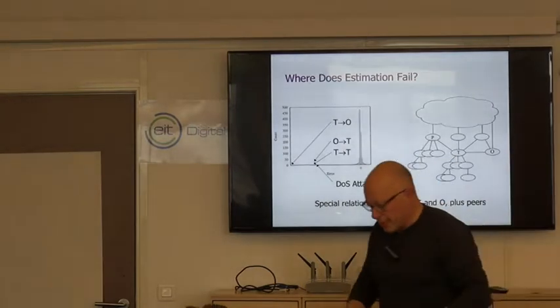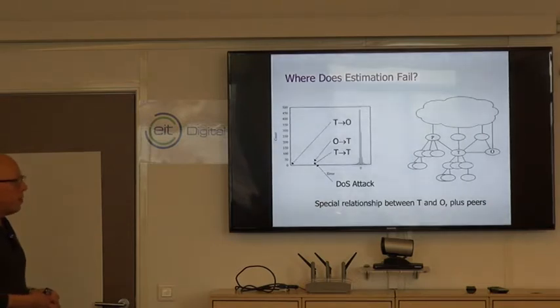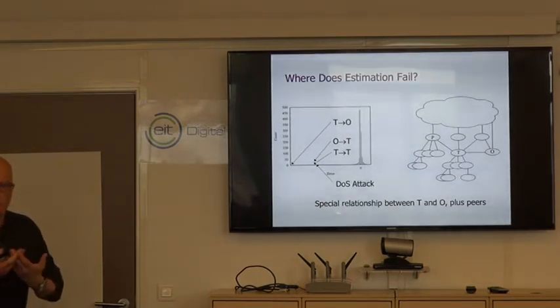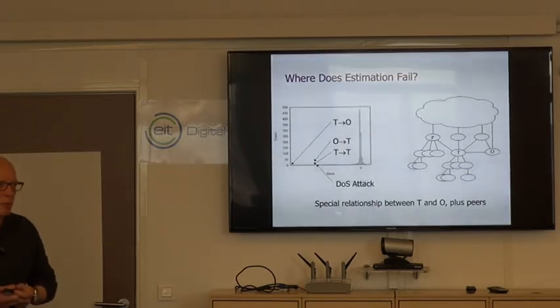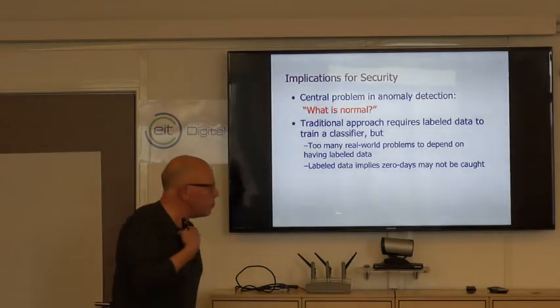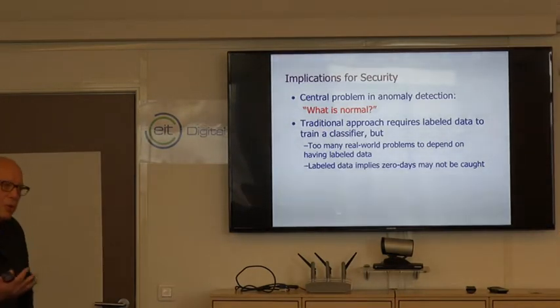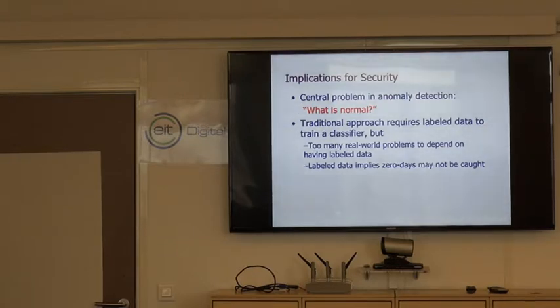These are all underestimates where the predicted value was much smaller than the observed value. Three of these turned out to be sister networks that were exchanging very large software distributions, Linux distributions. And the third one was a denial of service attack. So in some sense we can use this to compare predictions with reality and observe unusual behavior.